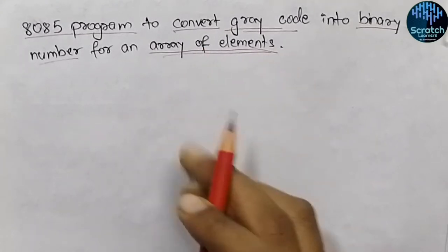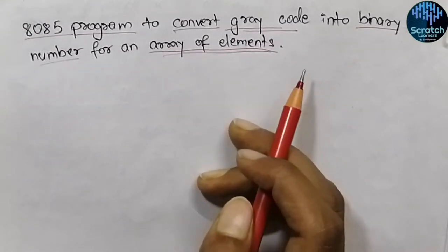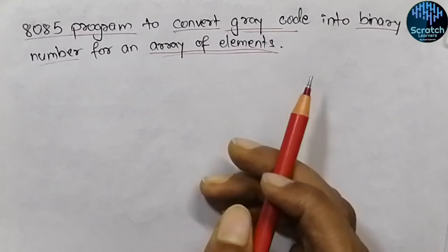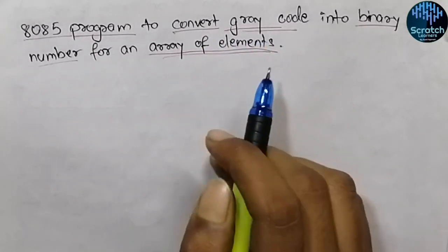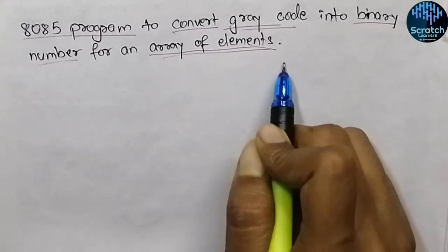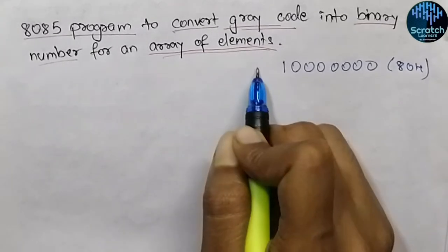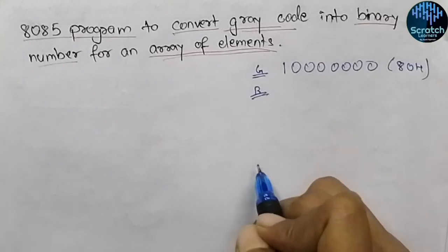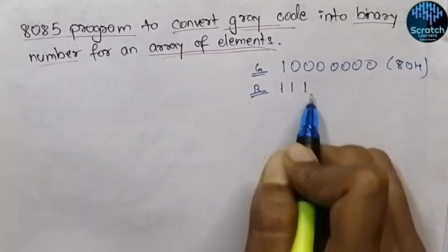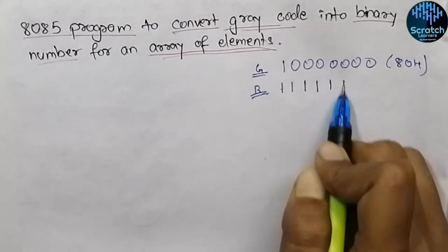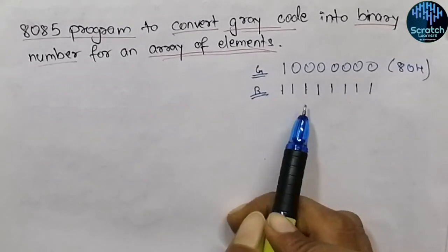We will apply the same method of conversion from gray to binary over an array of elements. The main concept is the same as the previous video, so I suggest you watch it first — the link is in the i-button. To recap: consider the number 0x80 in gray code. Converting it to binary: 1, then 1 XOR 0 = 1, 1 XOR 0 = 1, and so on — all bits become one. That is the binary result.